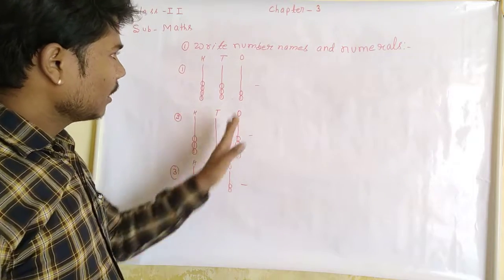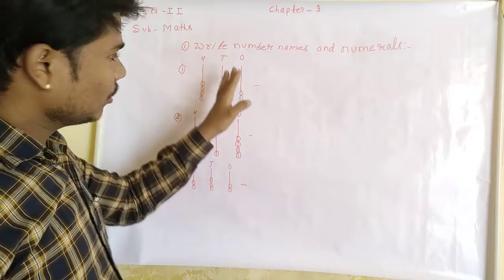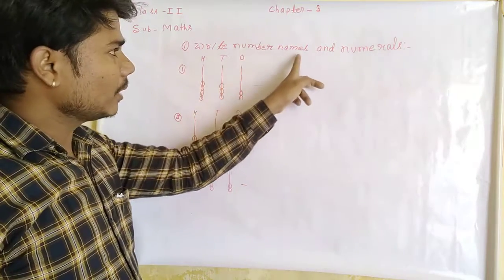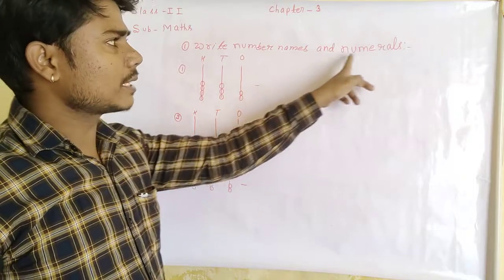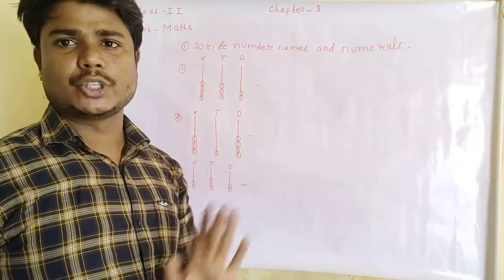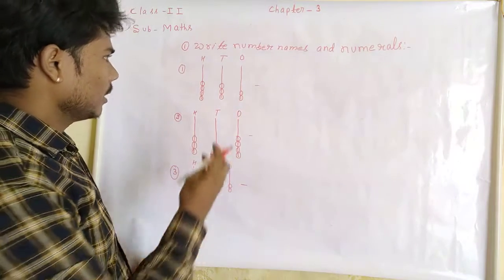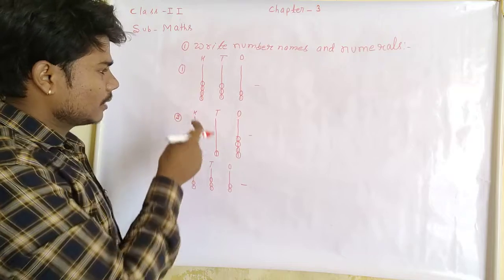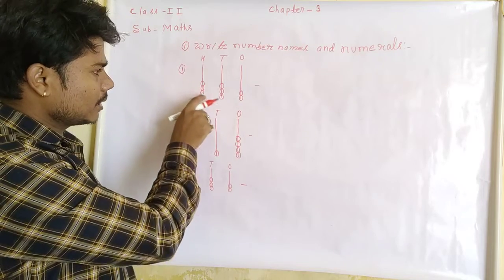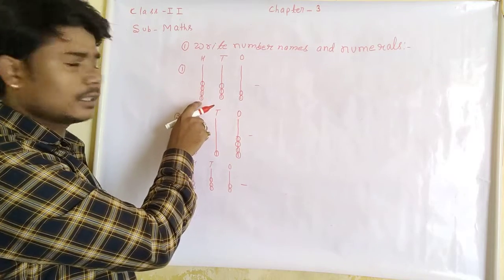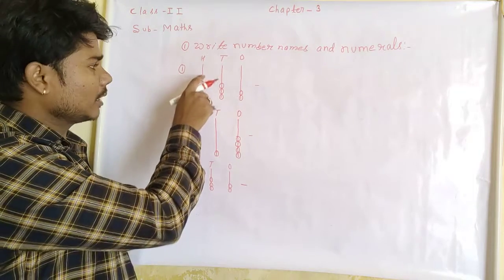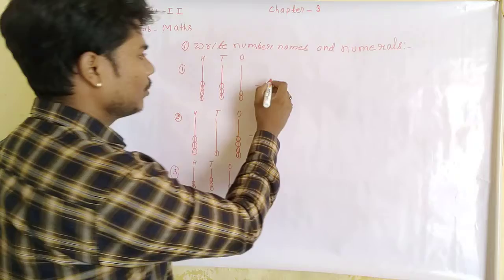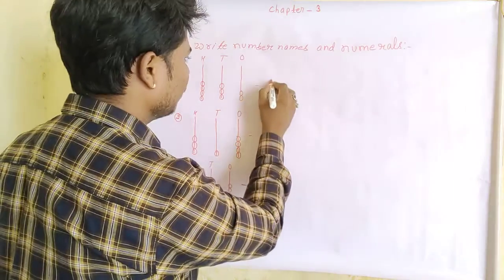In the question, we have to write number names as well as numerals. Look here — how many circles are there in the hundreds place? 4. So we have to write 4.